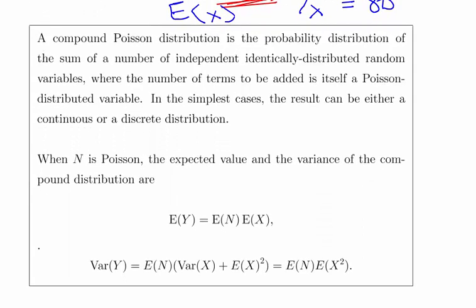A compound distribution is the probability distribution of the sum of a number of independently and identically distributed random variables, where the number of terms to be summed is itself a random variable — in this case a Poisson random variable representing the number of claims. When N is Poisson, the expected value of Y equals the expected value of N times the expected value of X.